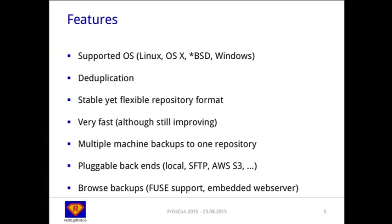A quick glance at the features: we support Linux, OS X on Darwin, all BSD variants, and Windows. We do deduplication as mentioned. The repository format is stable and extendable — it's JSON, so we can extend it without losing compatibility with prior versions. It's already pretty fast. You can use one backup repository for multiple machine backups, and if you have the same data on multiple machines backing up to the same repository, deduplication works there too. We have pluggable backends — local storage, SFTP is built in, and AWS S3 support, with more to come.